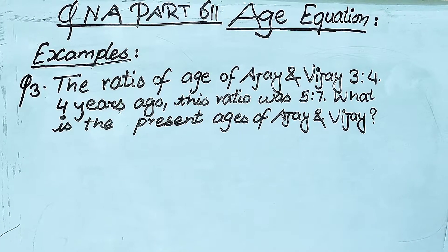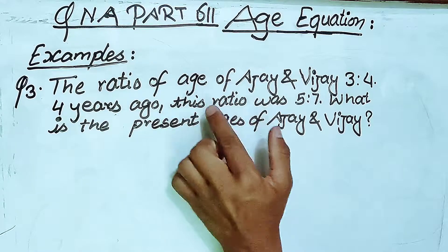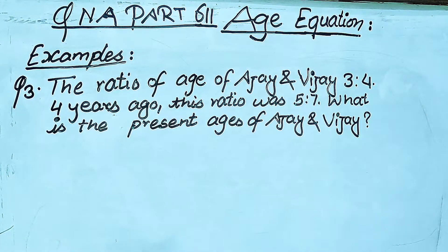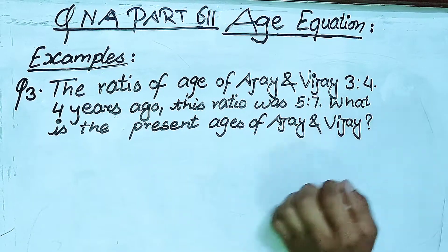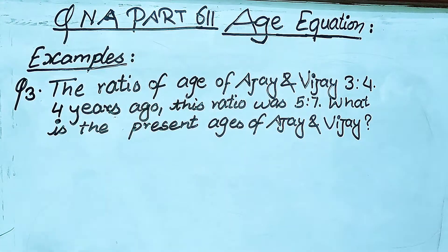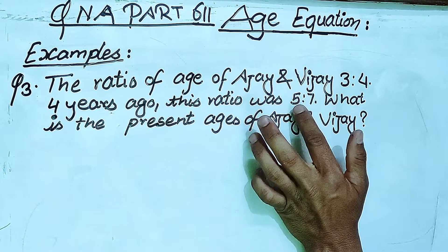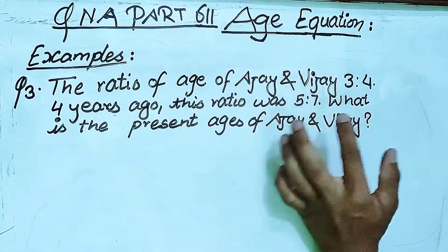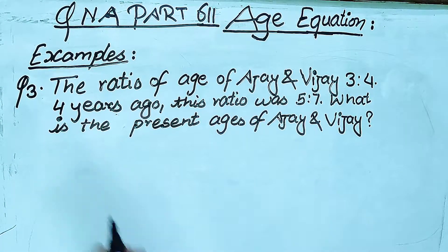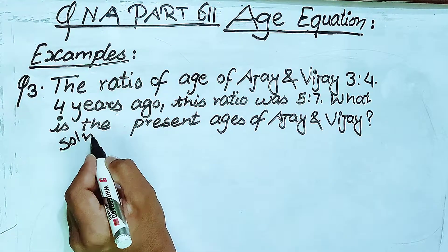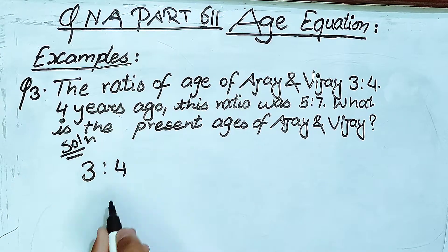The ratio of age of N and B is 3 to 4. Four years ago, this ratio was 5 to 7. What is the present age of N and B? Three and 5 are given.